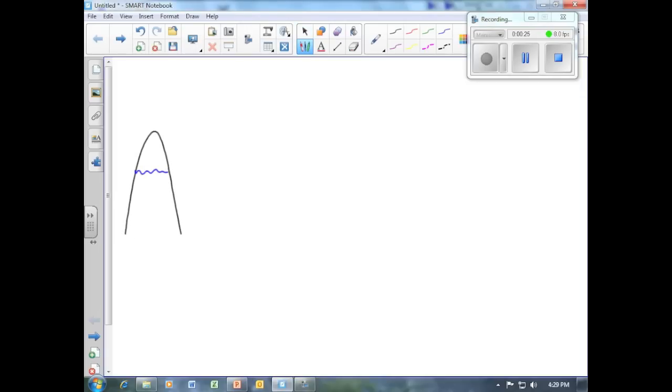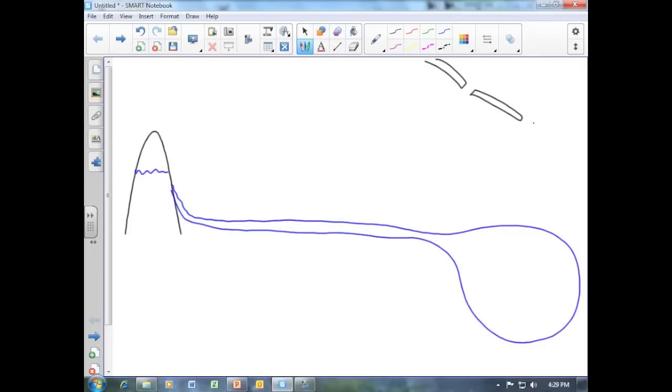To begin our review of environmental chemistry, we will first draw a mountain, a river, and a lake. The next thing we will draw is the sun and the stratospheric ozone layer.